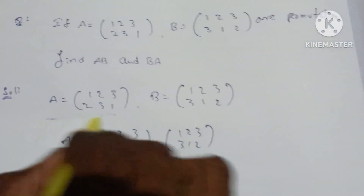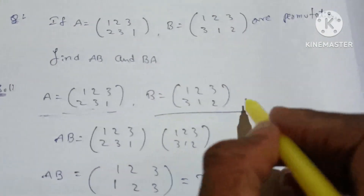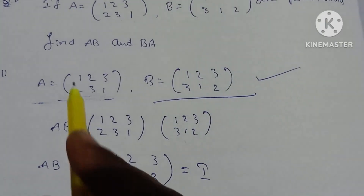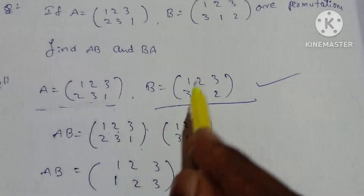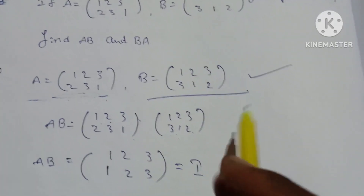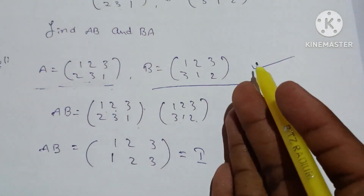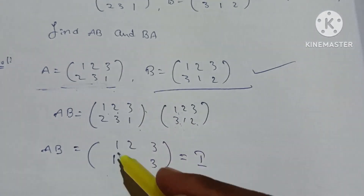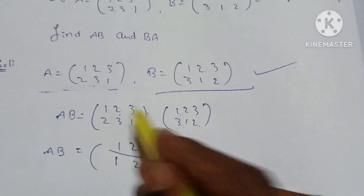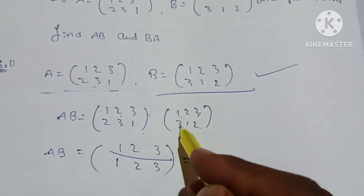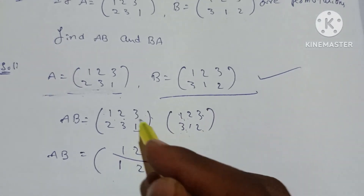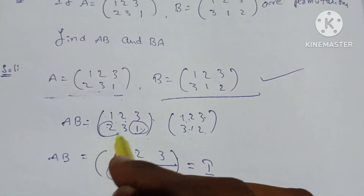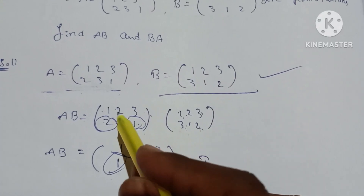Let's see first. The a value is equal to 1, 2, 3, 1 into 1, 2, 3, 3, 1, 2. So here 1 is 3, 3 equals 1, so we know value 1. Here 2 is 1, here 1 is 2, so here 2 is 2. So here 2 is 2, 3 equals 2, so 3 is 3.